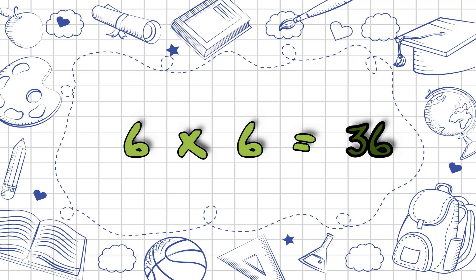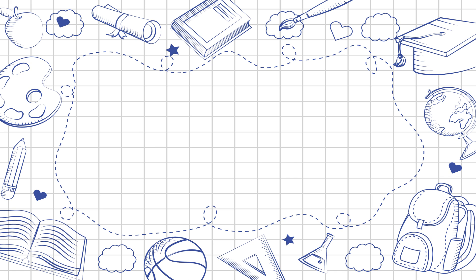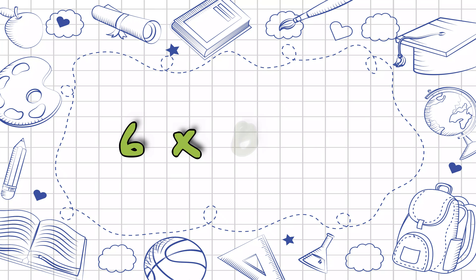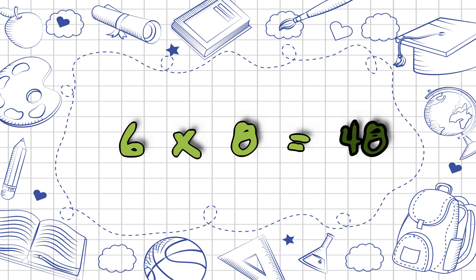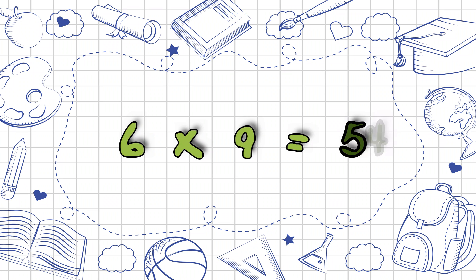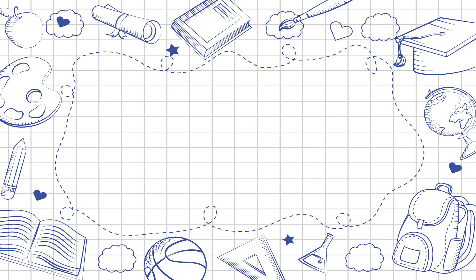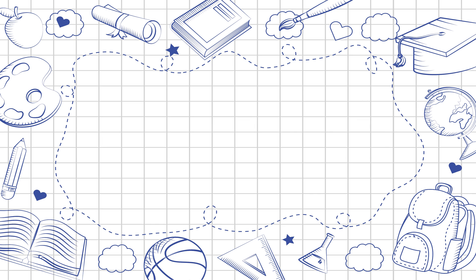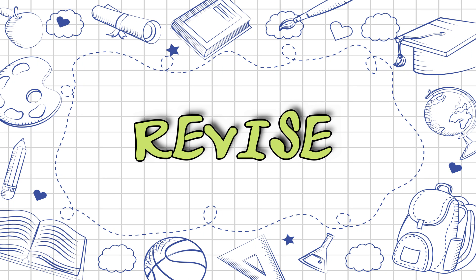Six sixes are thirty-six. Six sevens are forty-two. Six eights are forty-eight. Six nines are fifty-four. Six tens are sixty. Now let's quickly revise the table.